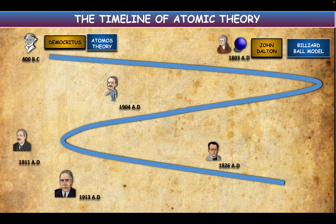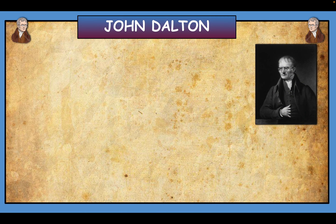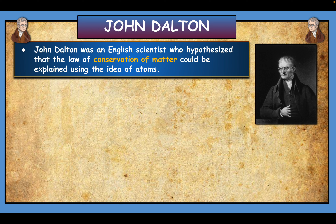In 1803, John Dalton started thinking about an idea called conservation of matter, which was a hot topic back then. John Dalton wanted to argue for it—he said this is a true scientific concept—and he wanted to use a better model of atoms. So he came up with his own model called the billiard ball model.